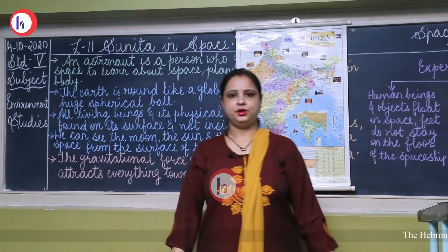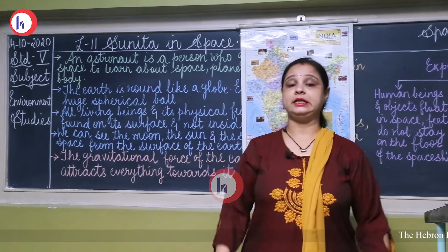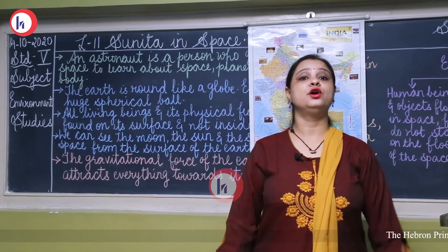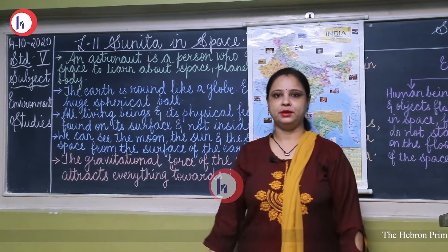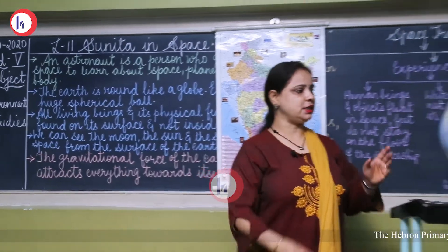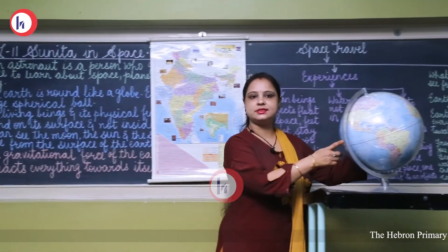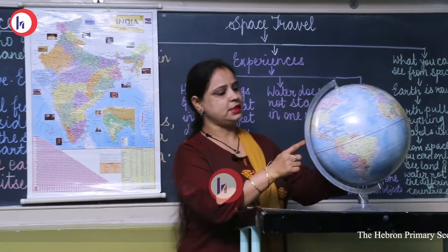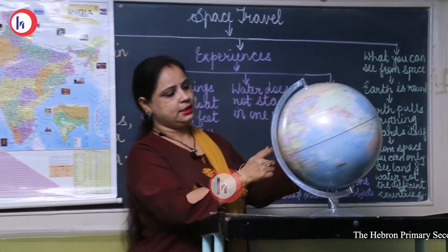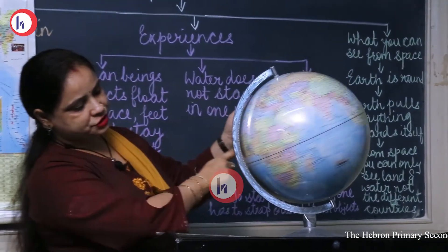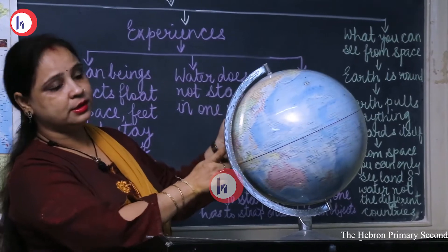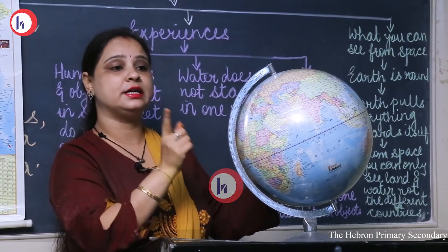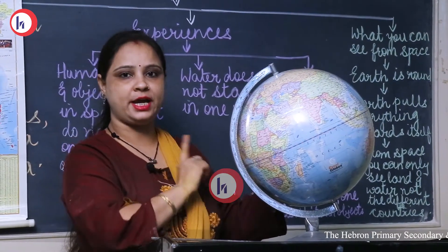Do you know that our earth is round like a globe? Have you seen the globe? This is a globe. Can you see the shape? Our earth is also like a globe — a spherical shape.